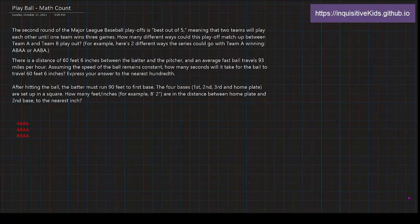Let's look at the first problem. The second round of the Major League Baseball playoffs is best out of five, meaning that the two teams will play each other until one team wins three games. How many different ways could this playoff matchup between Team A and Team B play out?